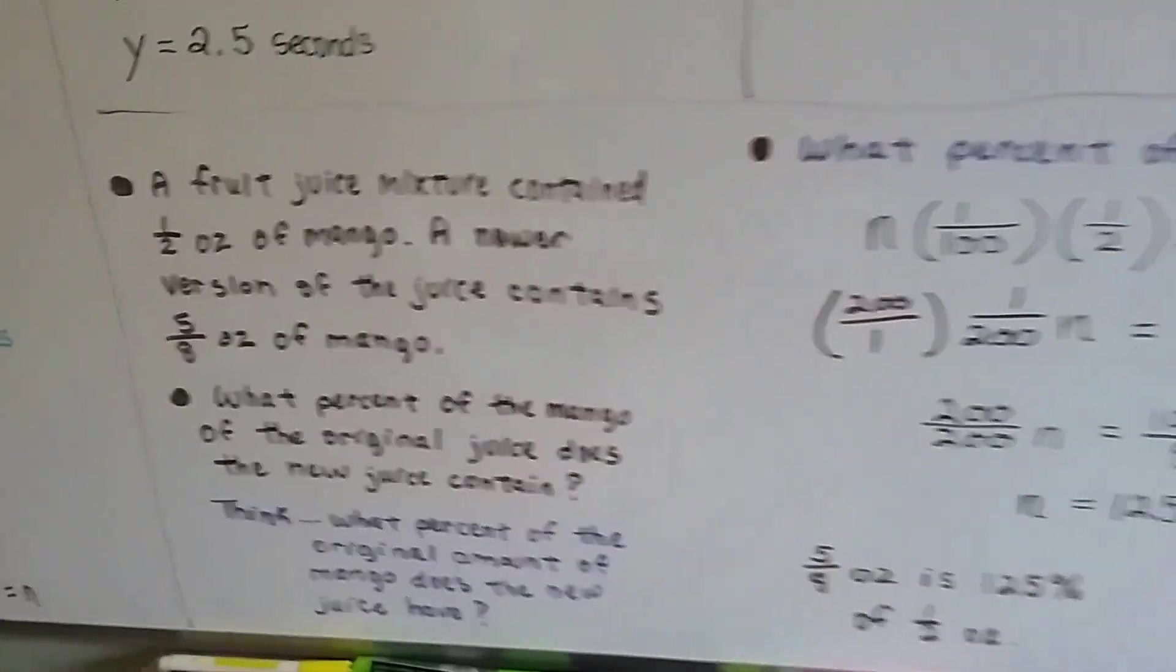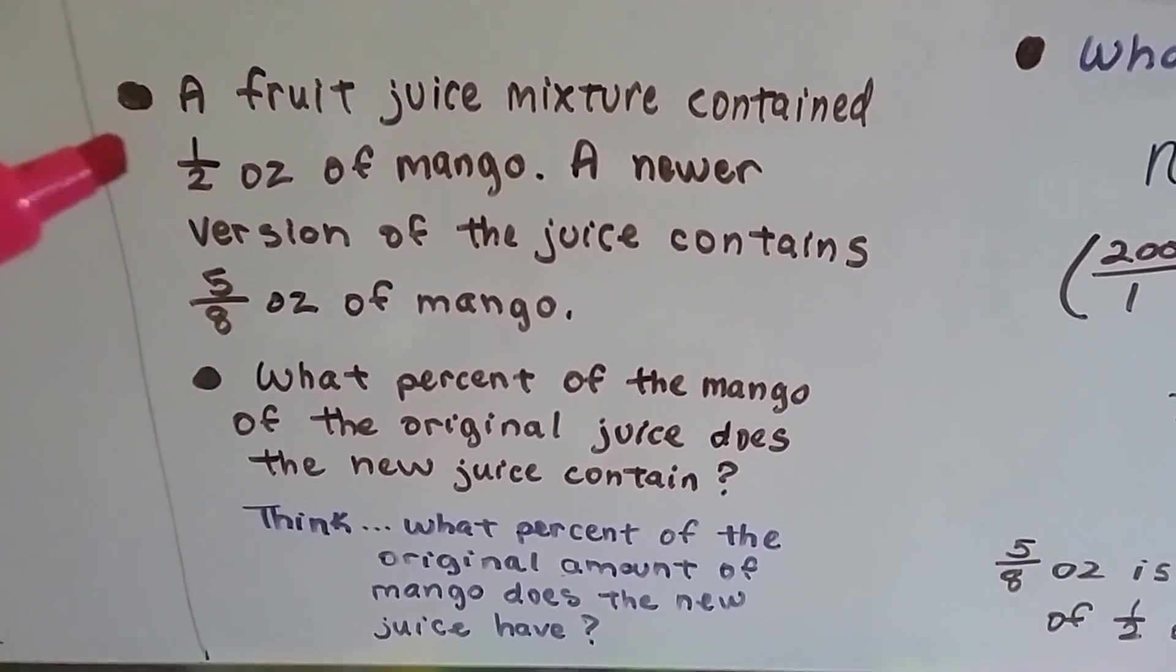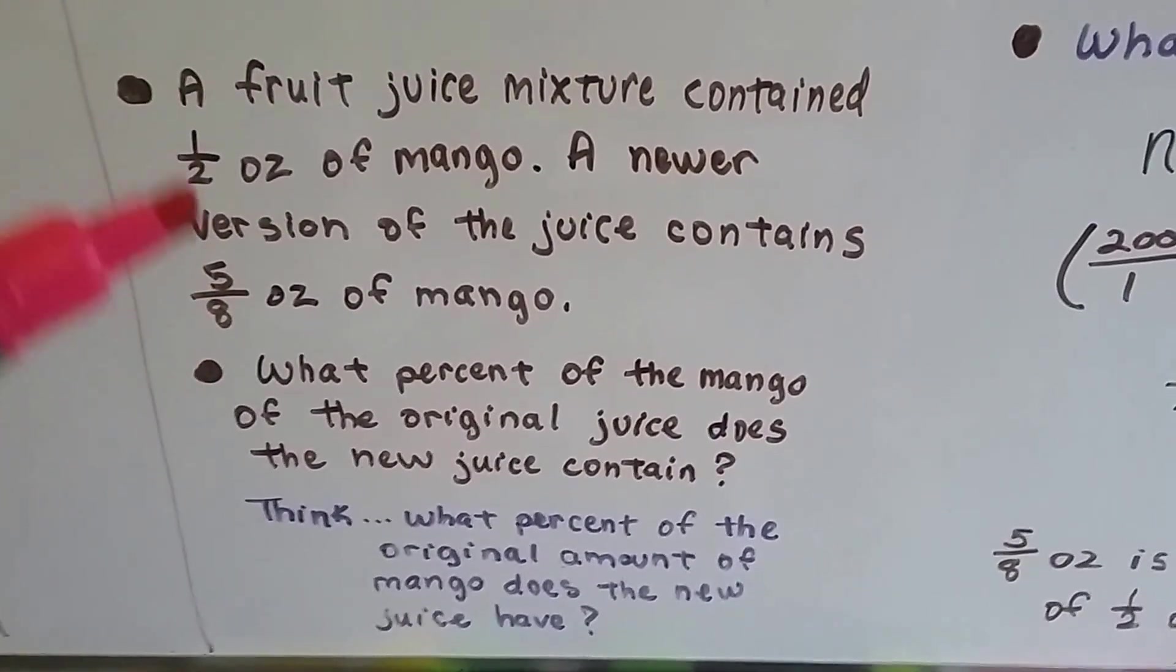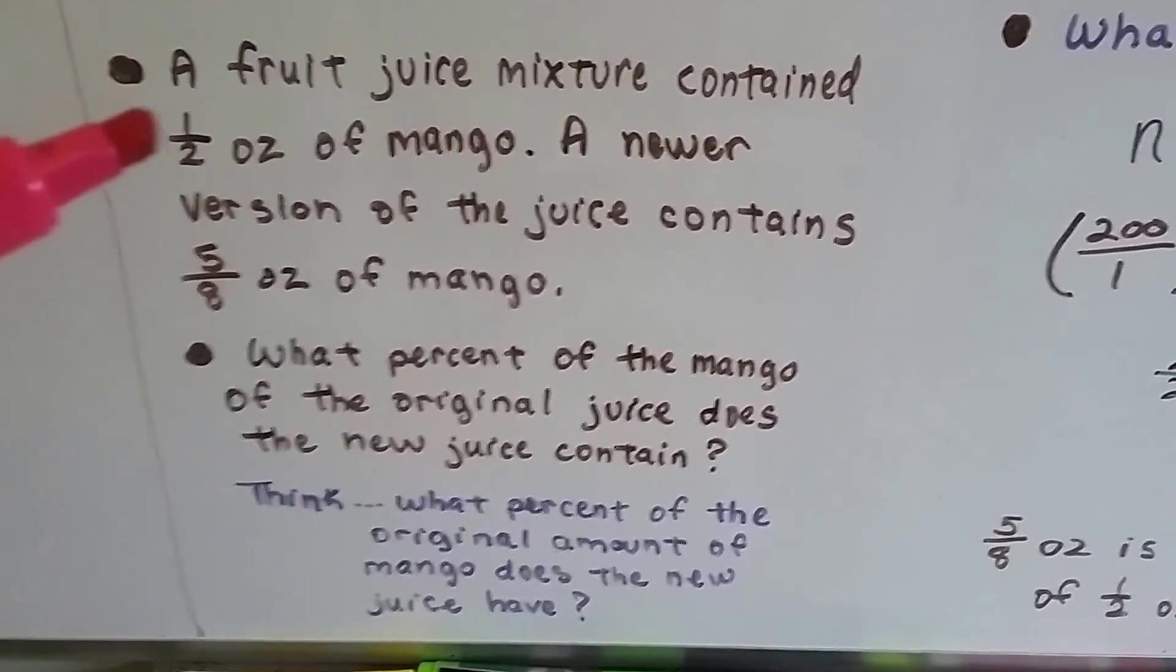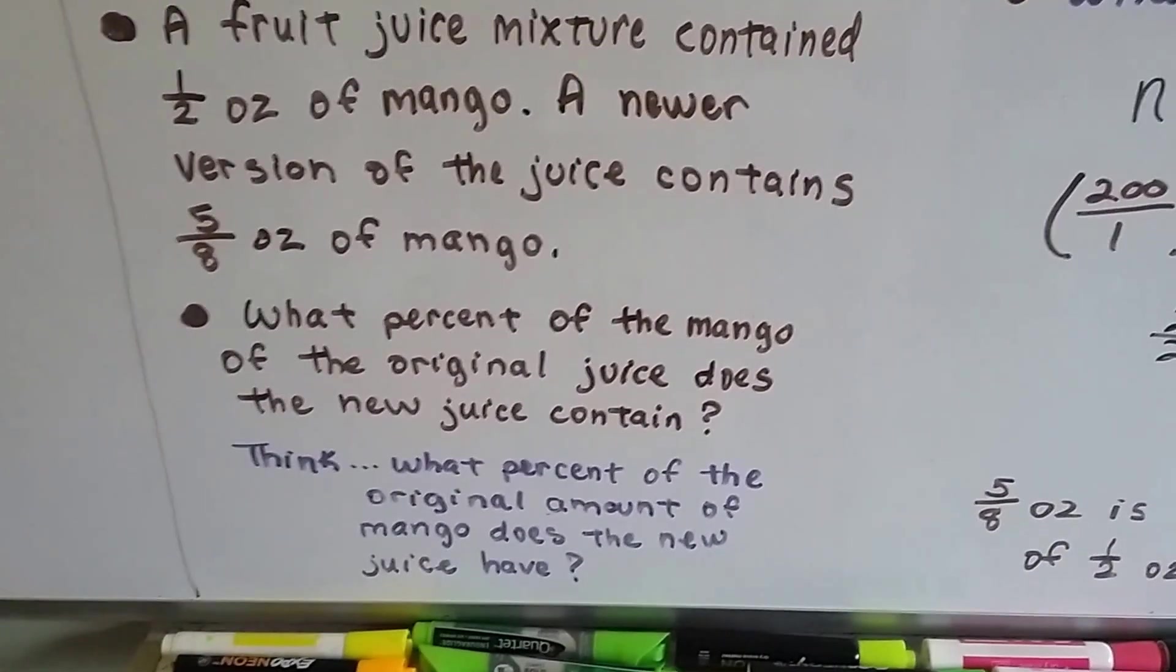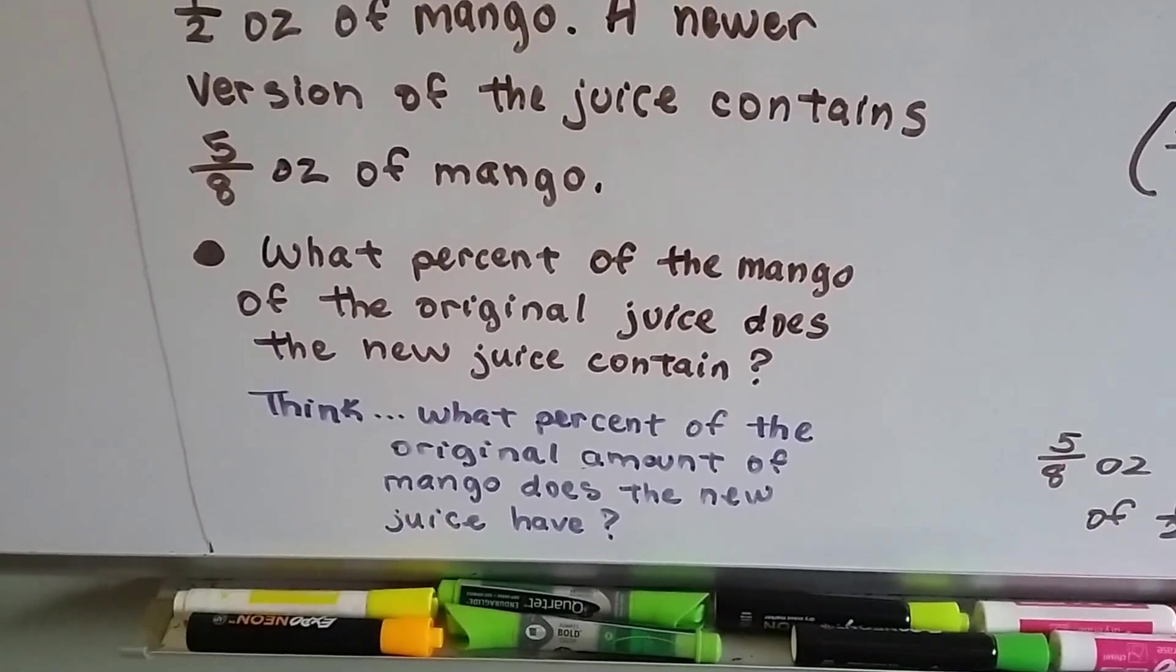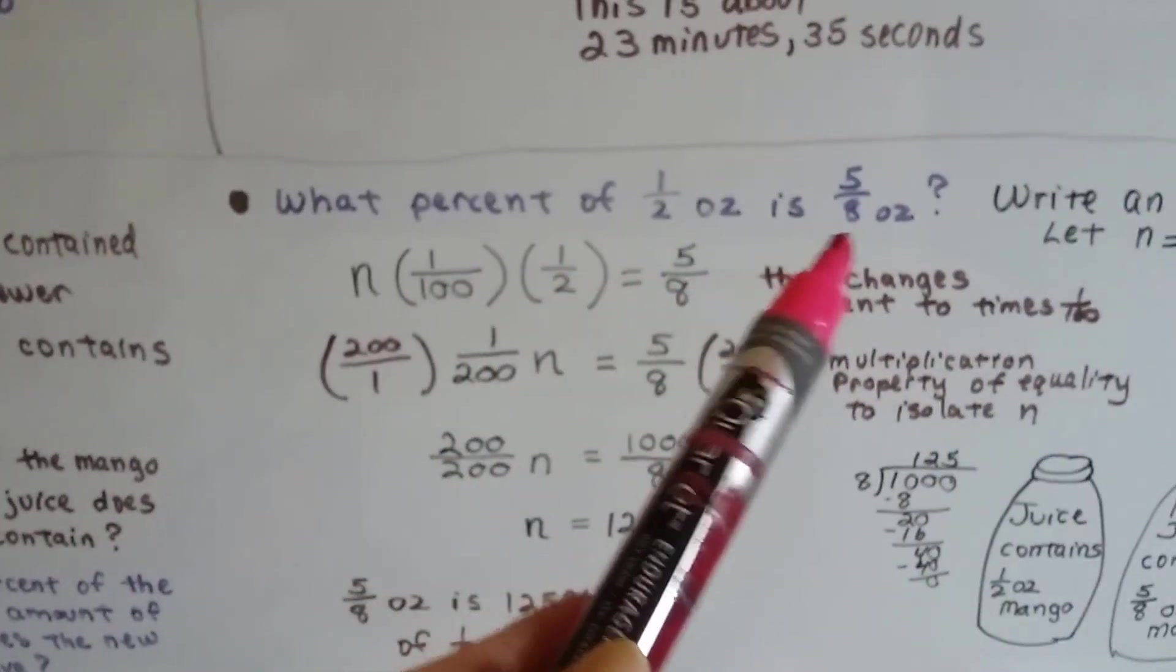Let's try this one. We've got a fruit juice mixture that contained a half an ounce of mango. And the company came out with a newer version of the juice that contains 5-8 ounce of mango. So, now it's got more, right? Because 5-8 is more than a half. A half is 4-8. That would be equivalent. So, now it's got 5-8 ounce of mango. What percent of the mango of the original juice does the new juice contain? So, what they're asking is, what percent of the original amount of mango does the new juice have? So, we've got to figure out what percent this is of this. What percent of a half ounce is 5-8 ounce?